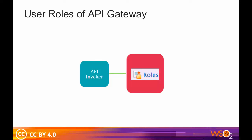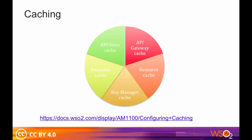The API invoker is the user role that uses the API Gateway. When an API call hits the API Gateway, the Gateway carries out security checks to verify if the token is valid. During these verifications, the API Gateway extracts parameters such as the access token, API name, and API version that are passed onto it.